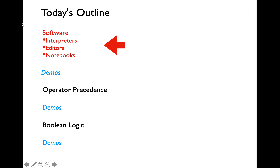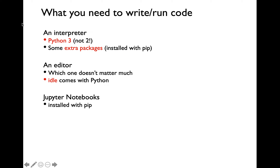Let's get started by talking about various pieces of software you need to know in order to write a Python program. The first piece of software that you need to know is an interpreter, which enables you to run your Python code. The second software is an editor, which enables you to write Python code. The last piece of software, something called Jupyter, enables you to write code using notebook format. We'll be using Jupyter notebook extensively as part of this course.